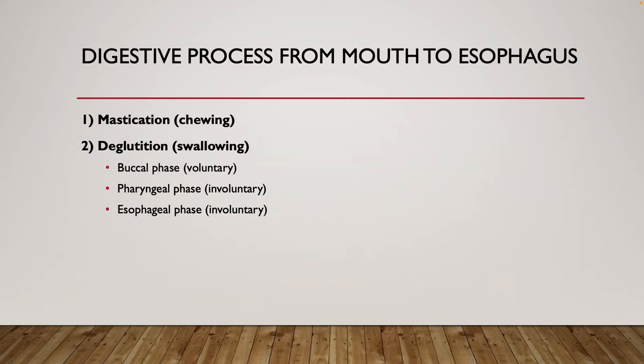The first thing you do when you eat something is chew. The term for chewing is mastication. You'll use the muscles of mastication, which include your masseter muscle, your temporalis muscle, as well as some smaller muscles known as your pterygoid muscles. All of these have to do with the movement of your jaw — your mandible — closing it and opening it to allow for chewing.